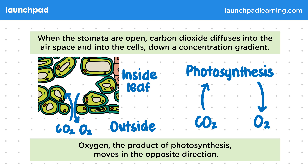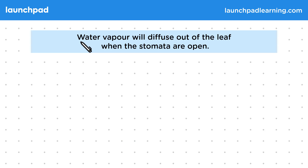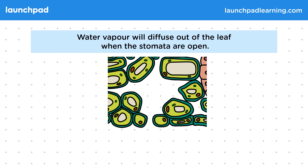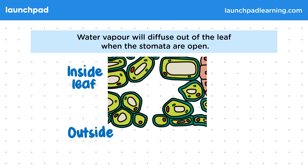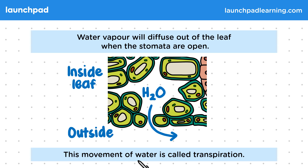What about water? Water vapour will diffuse out of the leaf when the stomata are open. This diagram shows the inside of the leaf here and the outside just beyond the bottom cells. Water is also diffusing to an area of lower water vapour, which would be outside of the leaf. This movement of water is called transpiration.